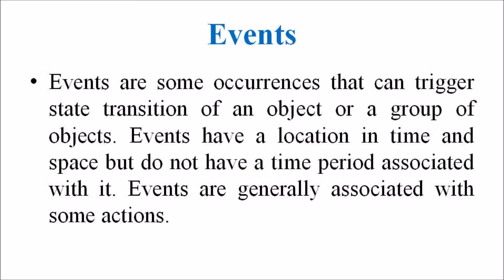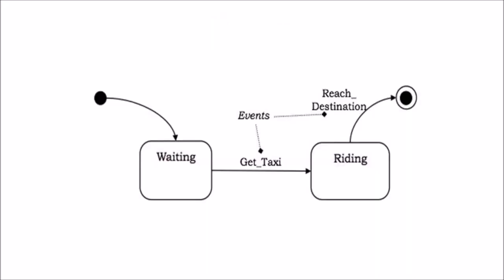Events that trigger transitions are written alongside the arc of transition in the state transition diagram. For example, the transition from the waiting state to the riding state takes place when the person gets a taxi. Likewise, the final state is reached when he reaches the destination. These two occurrences can be termed as events: get taxi and reach the destination. This figure shows the event in the state transition machine.